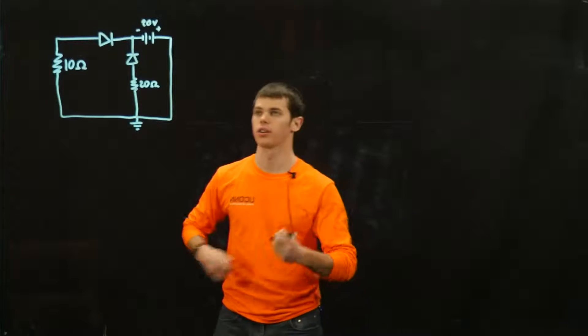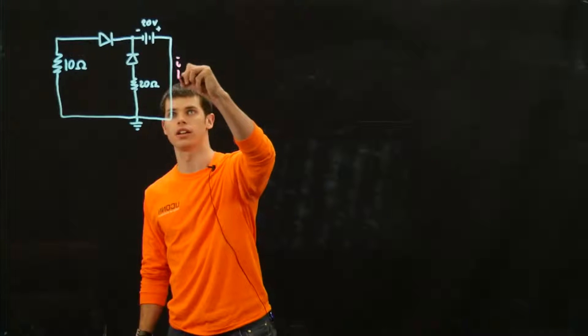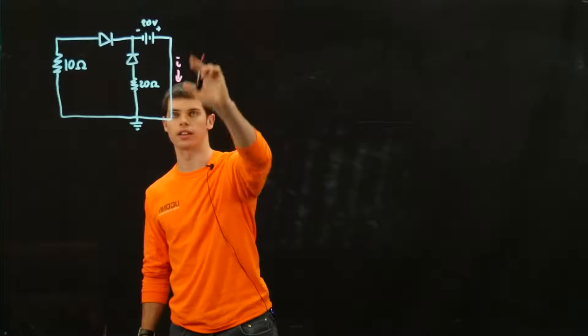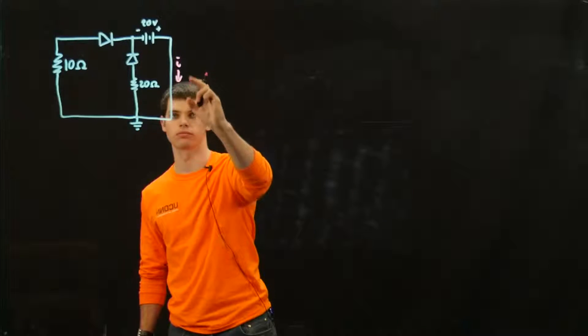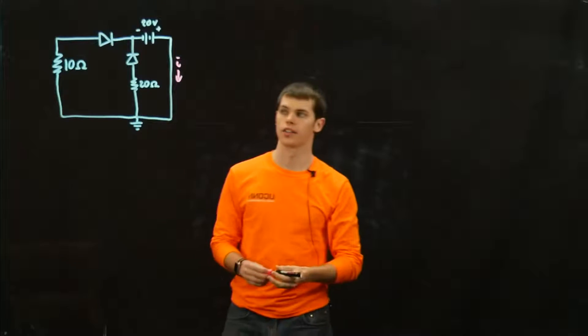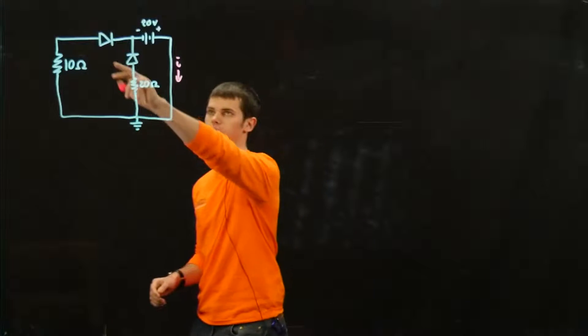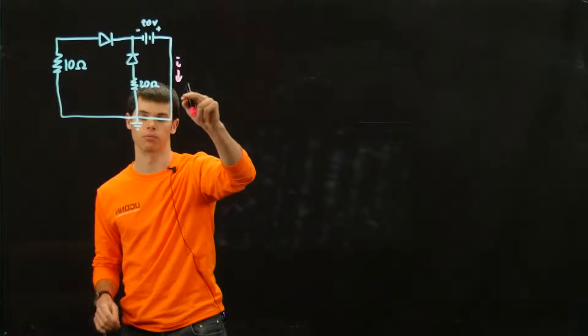For this circuit, we are going to find the current going along this channel. This is interesting because we have two separate diodes that are going to be feeding into this wire.